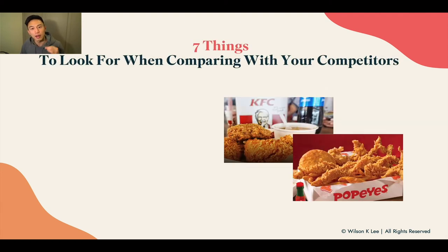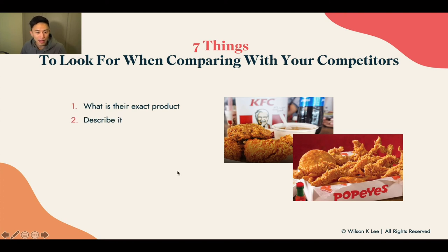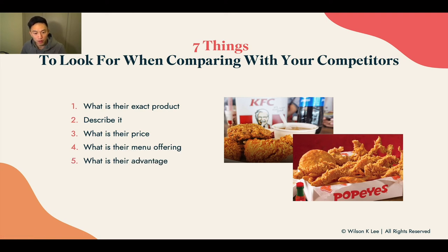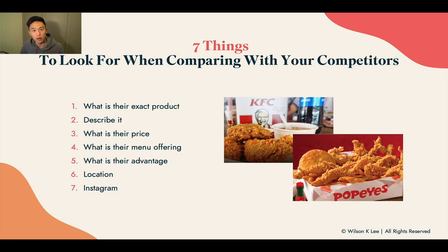The seven things to look for when comparing with your competitors: what are their exact products — if comparing with direct competitors, compare chicken with chicken, or biscuits or fries; identify the pricing; their full menu offering; what makes them different; what is their specific advantage over yours; where are they located, because convenience is a key role in purchasing food items — though if you sell online, this is less of a problem; and what is their Instagram following like? These are the seven things to look at when comparing with your competitors.